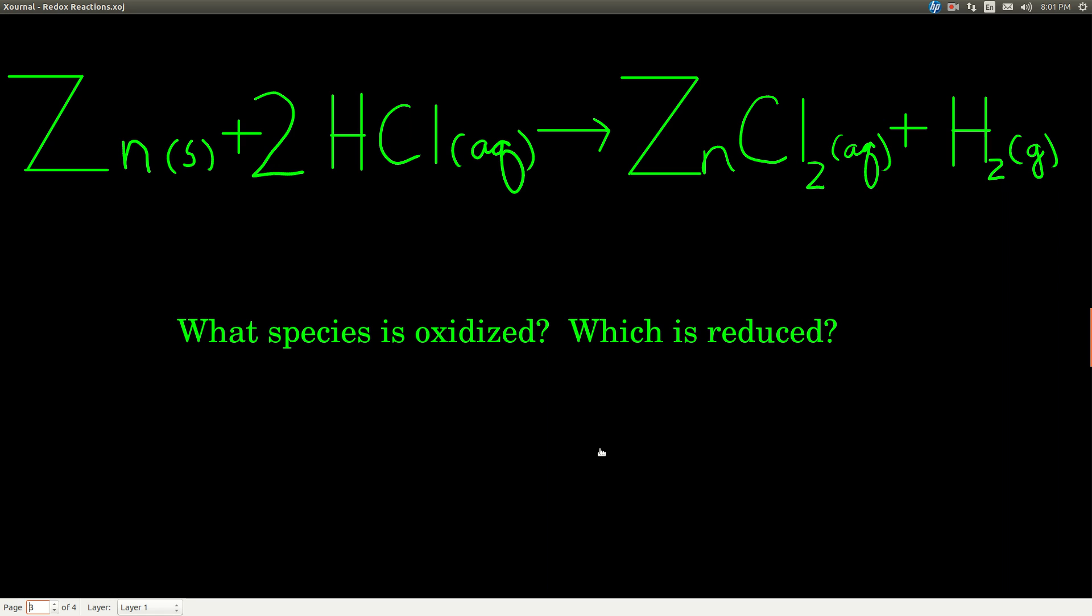Now you won't always see the chemical equation written with the charges, but you can still tell a lot of times what's being oxidized and what's being reduced. So for example, in this reaction here: zinc metal and hydrochloric acid to make zinc chloride and hydrogen gas. By the way, do you recognize what type of reaction this is? That's right, it's a single replacement reaction.